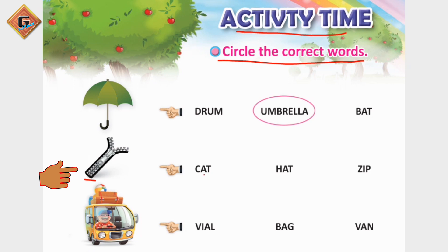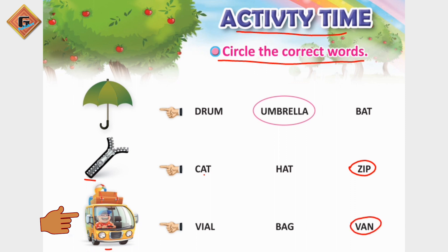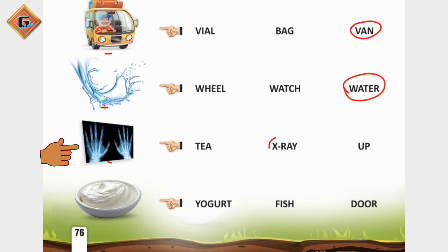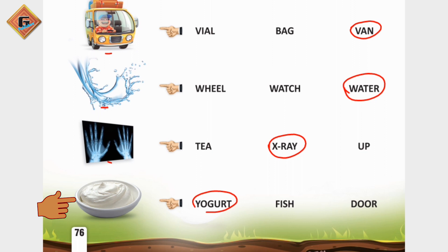No, hat — no, we need to circle umbrella. Next picture is van. Here we will see bag, van — we need to circle van. Next is water — we will circle water. Now we have to move to the next page.